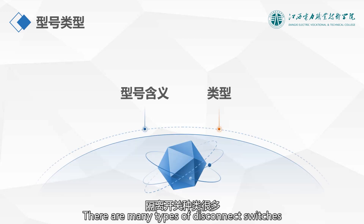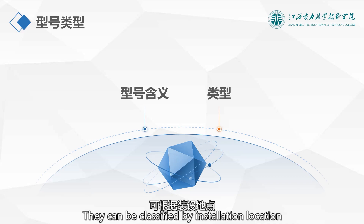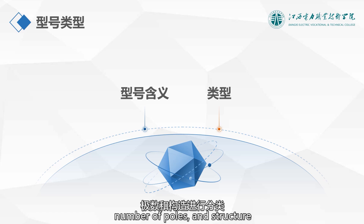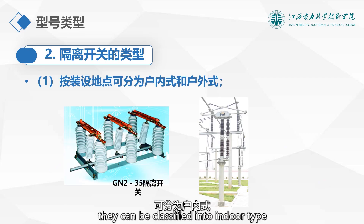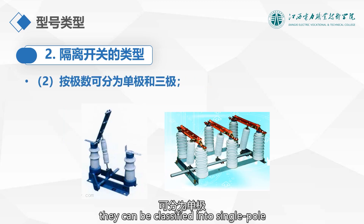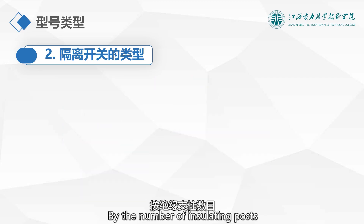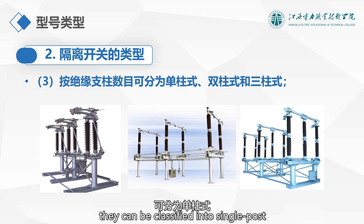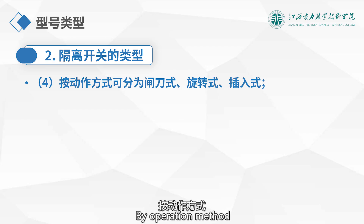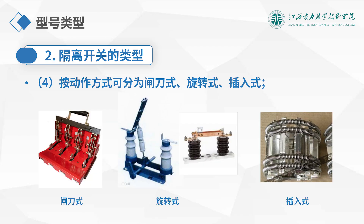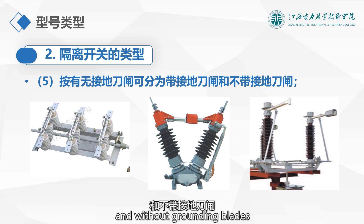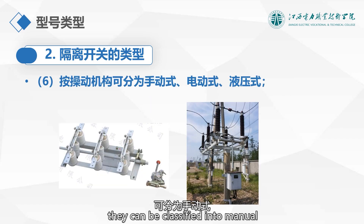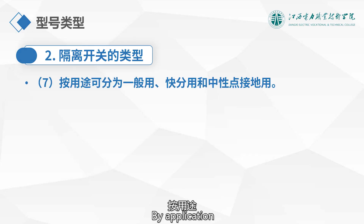The classification of disconnect switches: there are many types. They can be classified by installation location into indoor type and outdoor type; by number of poles into single pole and three-pole; by number of insulating posts into single post, double post, and triple post; by operation method into knife switch type, rotary type, and plug-in type; by presence of grounding blades into with or without grounding blades; by operating mechanism into manual, electric, and hydraulic; and by application into general purpose, quick break type, and neutral grounding type.